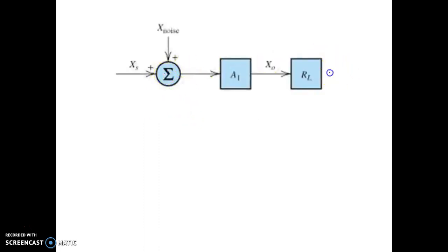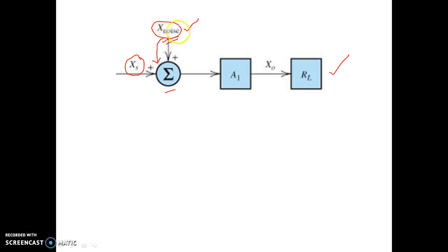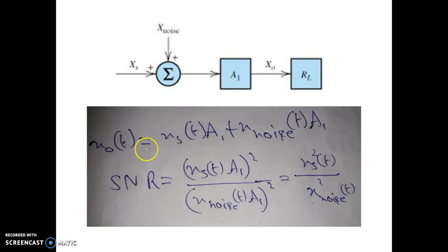Suppose this is a general block diagram of an amplifier where Xs is the input parameter — it may be voltage or it may be current — and with it some input noise is added. Just to make the mathematical analysis simpler, we have added it in the summation block, but generally noise is automatically added on the input side. So X_noise is added, and we are giving the input Xs plus X_noise to an amplifier whose gain is A1, and then we are taking the output across the load resistor RL.